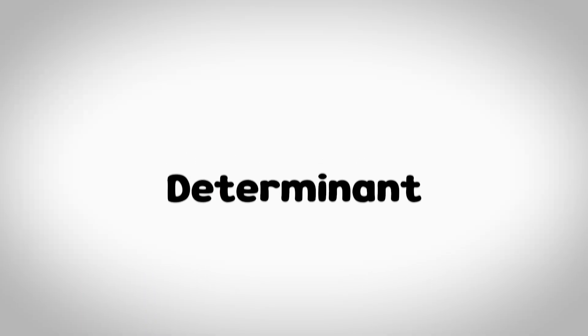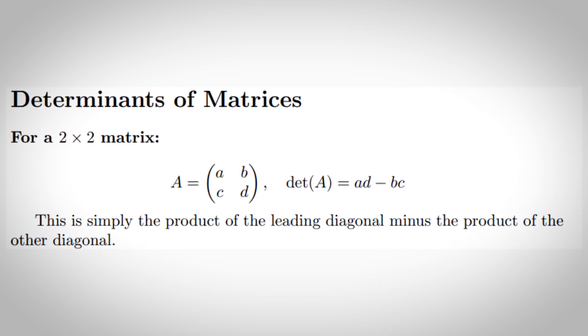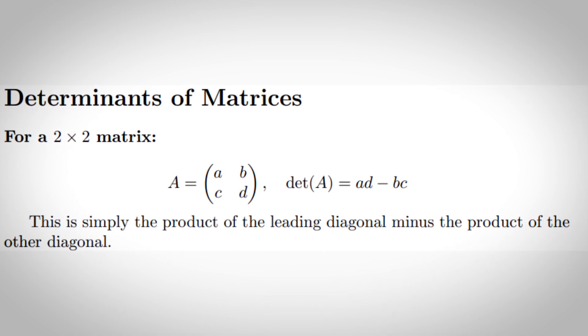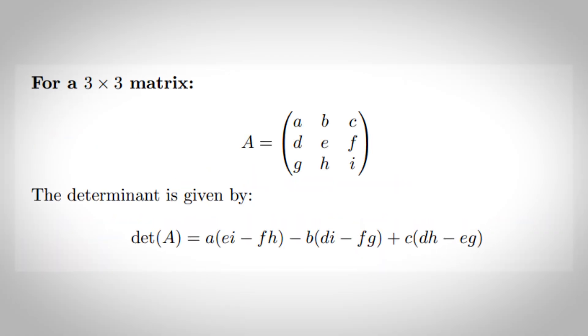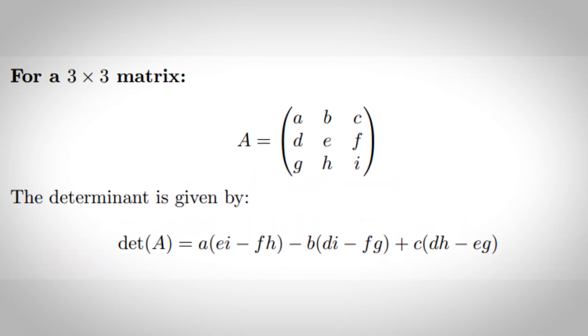Determinant. Another cool thing you can do with matrices is determinants. If you have a 2×2 matrix, then the determinant of this is just the product of the leading diagonal minus the other diagonal. If it's a 3×3 matrix, then you use this formula and a 4×4, then you use this and so on.